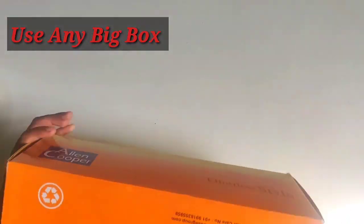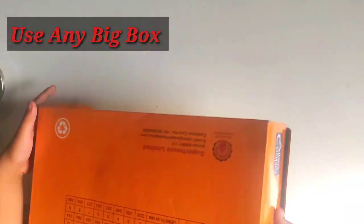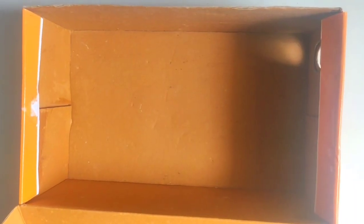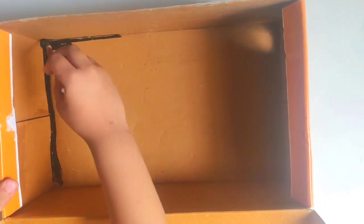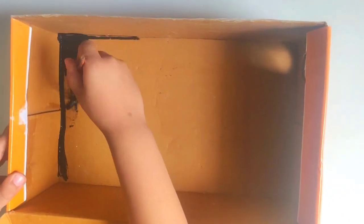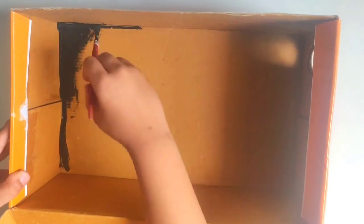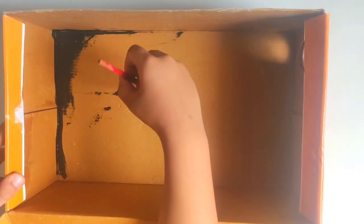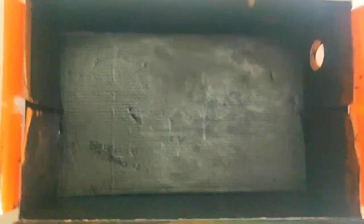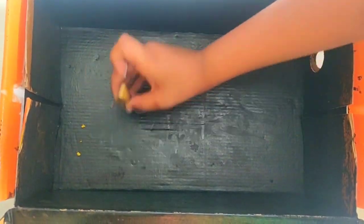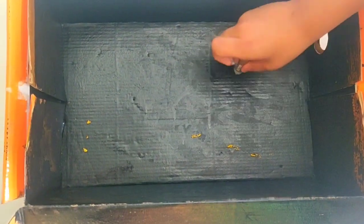Here I am using a shoe box. You can use any big box. Let's paint it with black color. Now we will use golden and silver glitter.